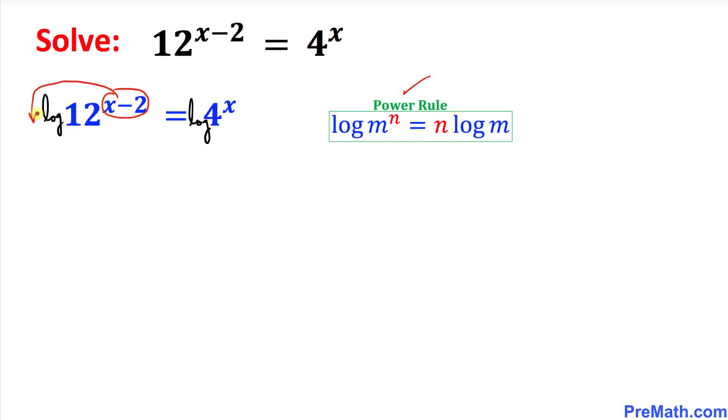Likewise, this exponent, this power, moves to the front as well. So therefore I can write this one as x minus 2 times log of 12 equals x times log of 4. And now let's go ahead and distribute this one.